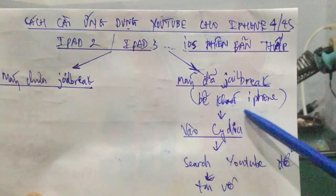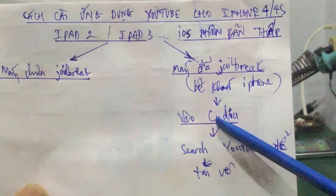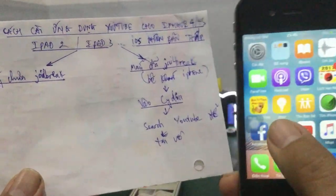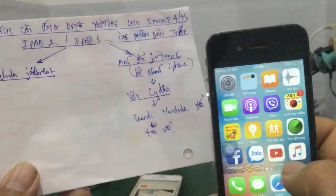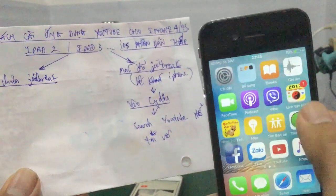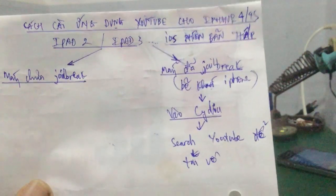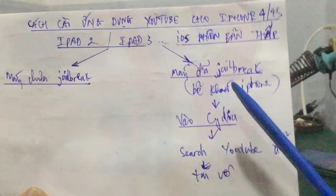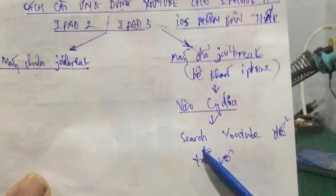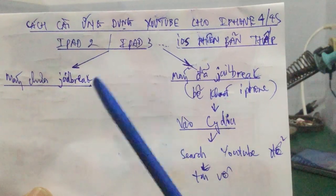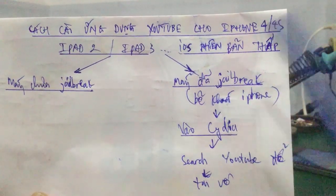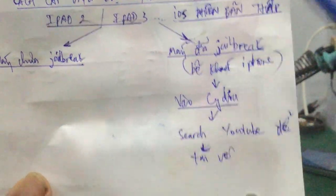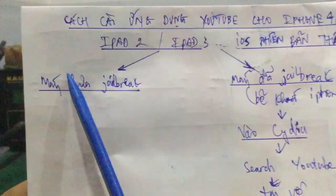Khi mà các bạn đã jailbreak, tức là bẻ khóa iPhone, thì trong cái máy các bạn sẽ có một ứng dụng gọi là Cydia. Các bạn nhìn thấy biểu tượng ở đây, ứng dụng tên là Cydia. Nó cũng giống như phần App Store. Thì các bạn vào Cydia, tìm phần YouTube và tải về. Đây là cách dành cho những cái máy phiên bản cũ mà đã jailbreak. Còn những máy nguyên bản chưa jailbreak thì các bạn làm cách nào?